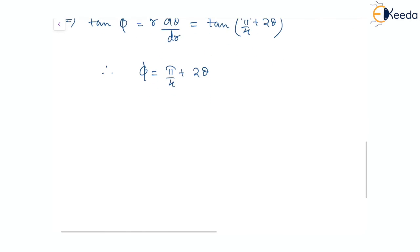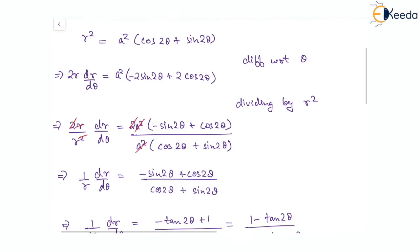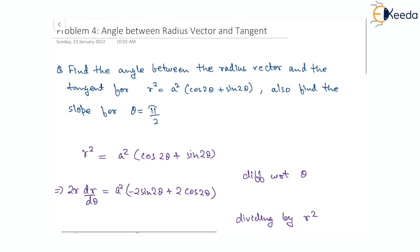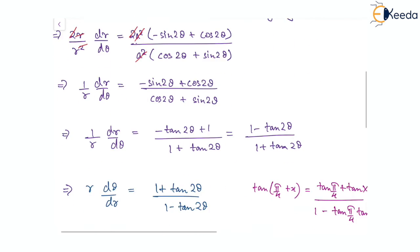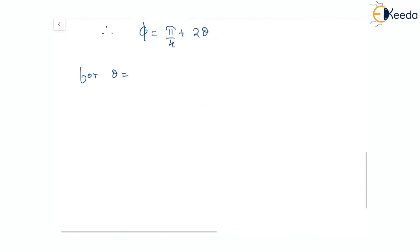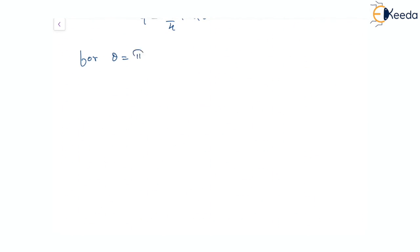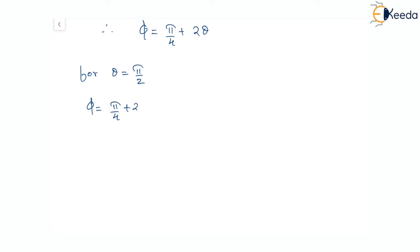It is given that θ = π/2. Using θ = π/2, φ = π/4 + 2·(π/2) = π/4 + π = 5π/4.